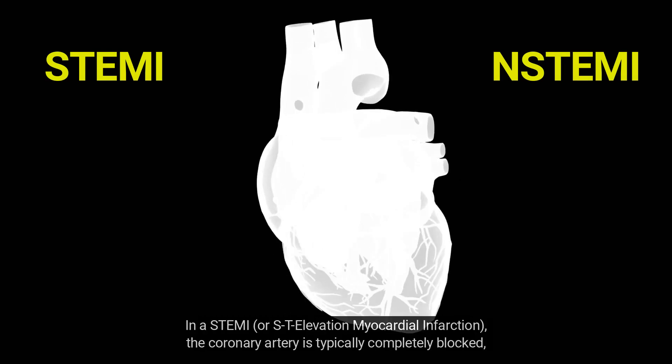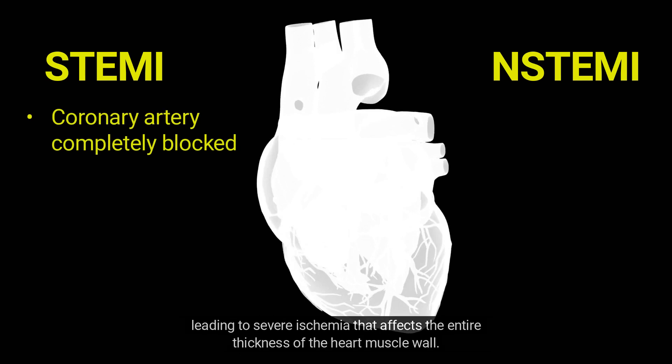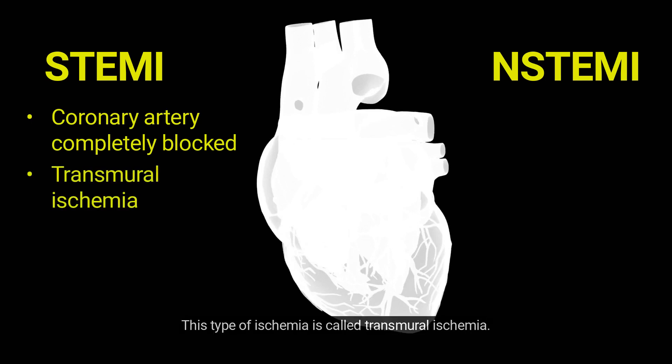In a STEMI, or ST-elevation myocardial infarction, the coronary artery is typically completely blocked, leading to severe ischemia that affects the entire thickness of the heart muscle wall. This type of ischemia is called transmural ischemia.